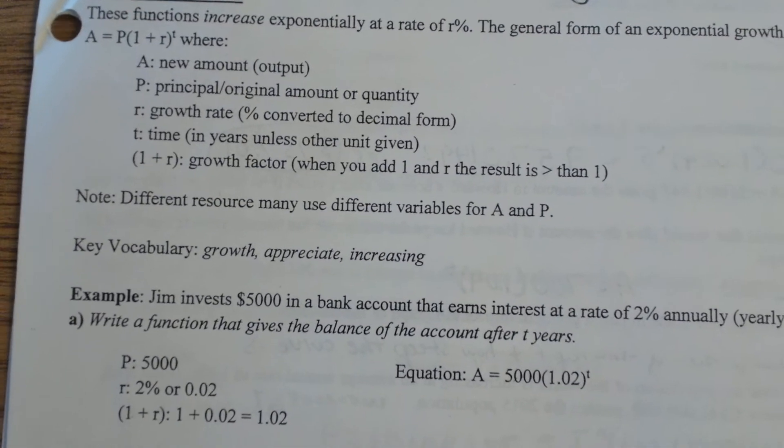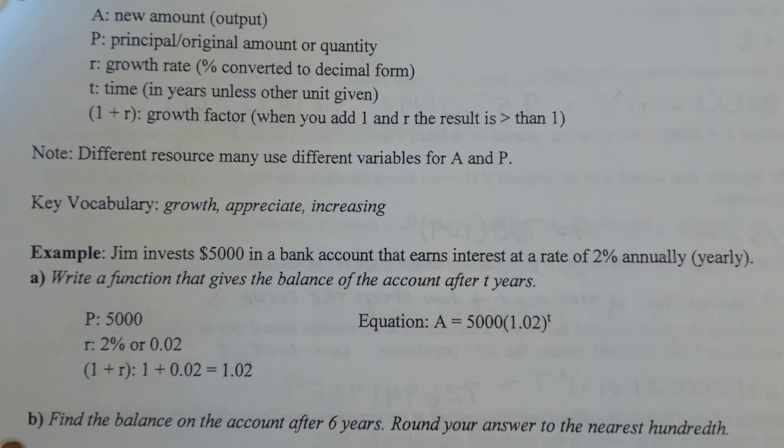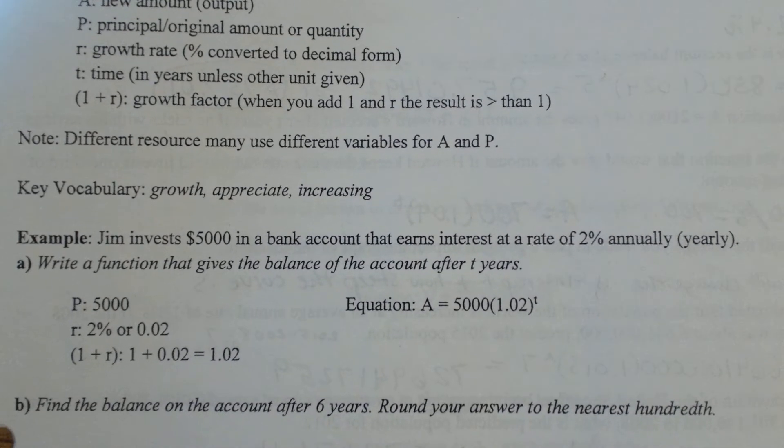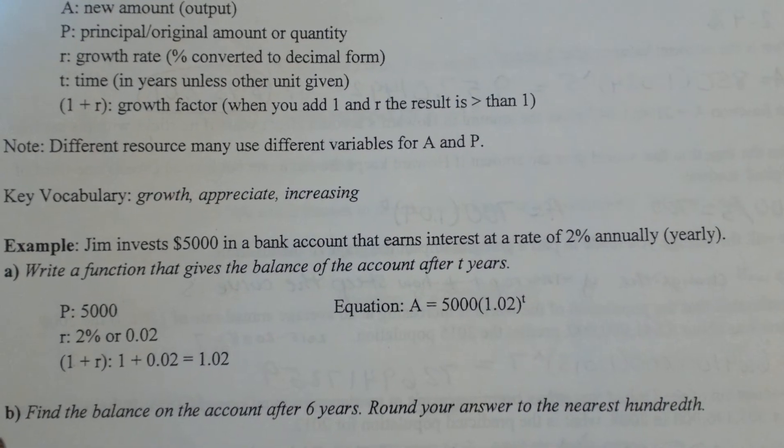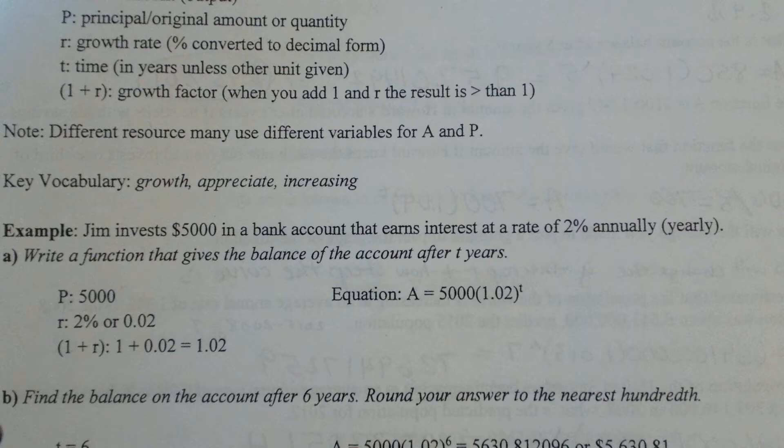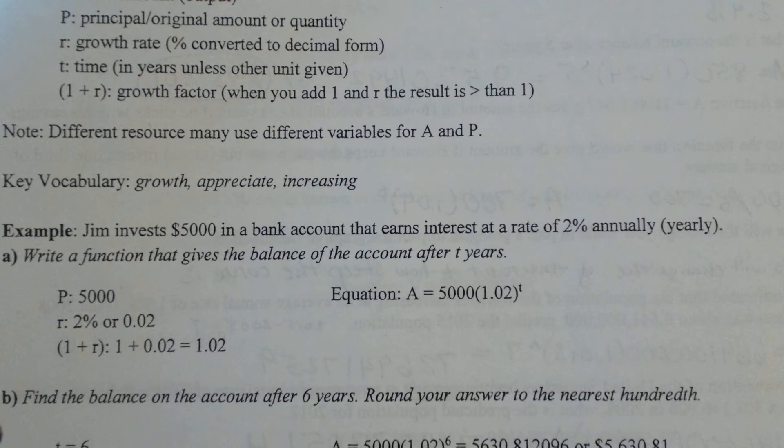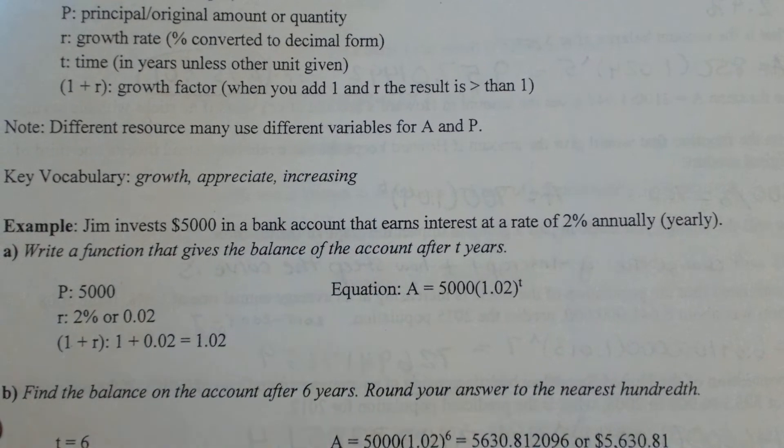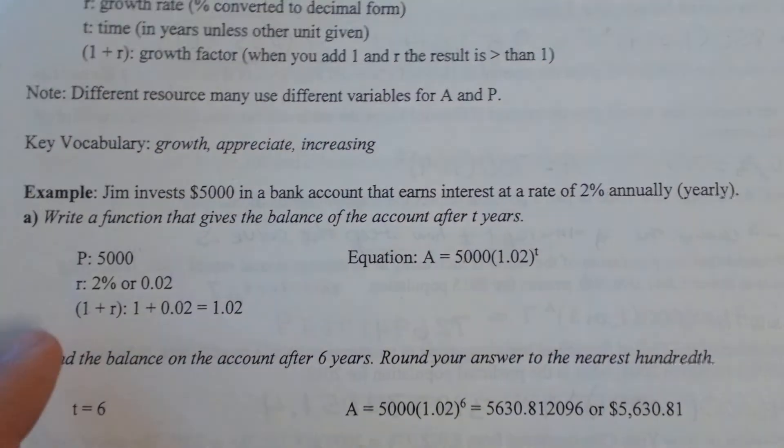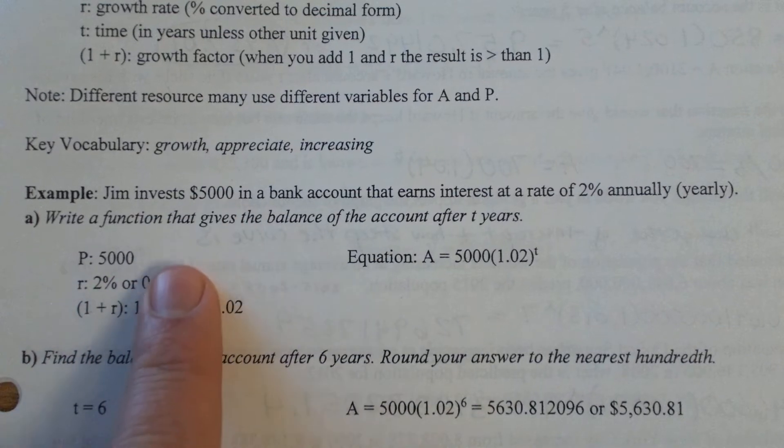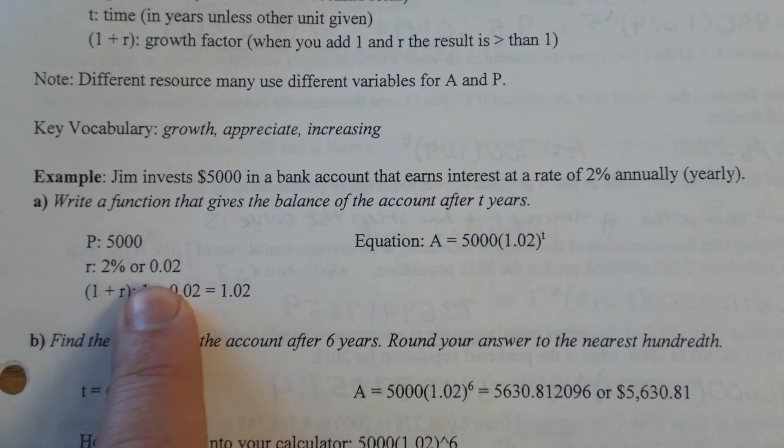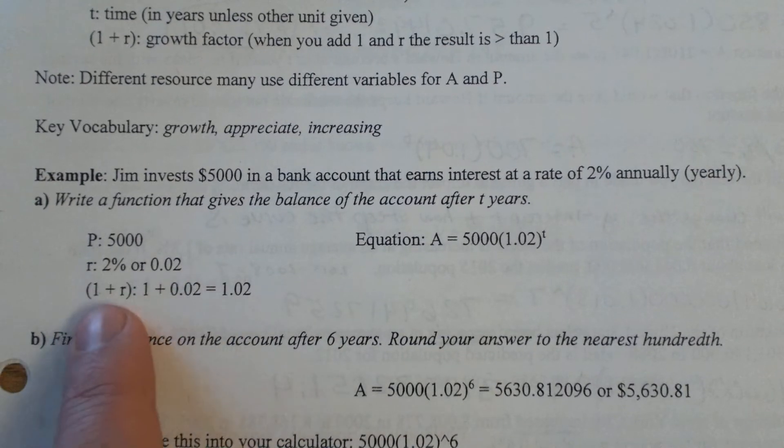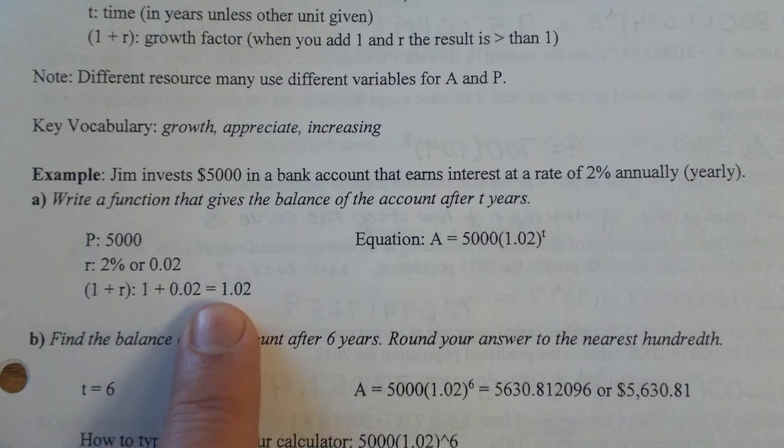So an example that's provided for you here. Jim invests $5,000 into a bank account that earns an annual rate of 2%, so annual being every year. Typically bank accounts now are much lower than that when they're a savings account, but this is a simple example here. So P is going to be your initial amount of $5,000, your rate 2% is converted to 0.02, and that growth factor there is 1 plus your rate.